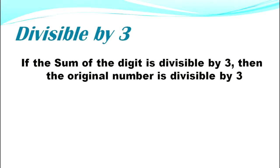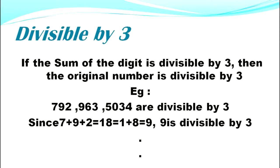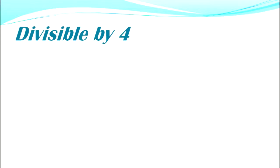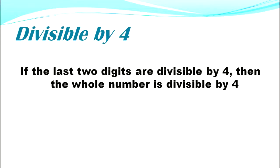Divisible by three: if the sum of the digits is divisible by three, then the original number is divisible by three. Example: 792, 963, and 5034 are divisible by three, since 7 + 9 + 2 = 18, and 1 + 8 = 9, which is divisible by 3.